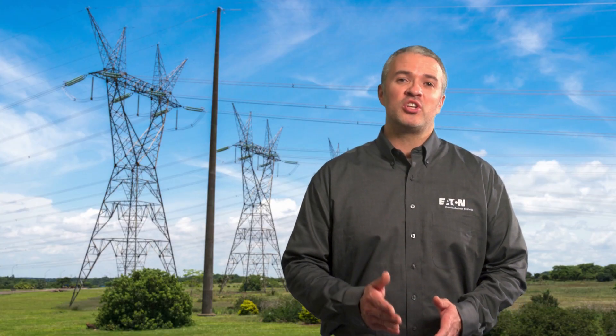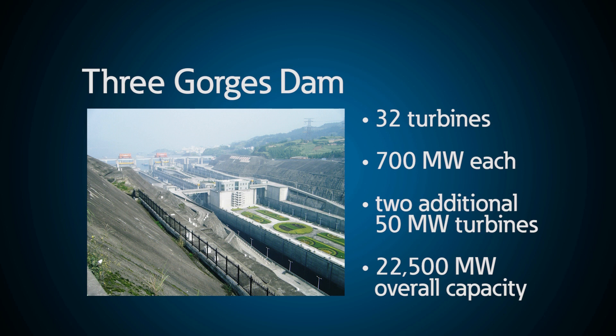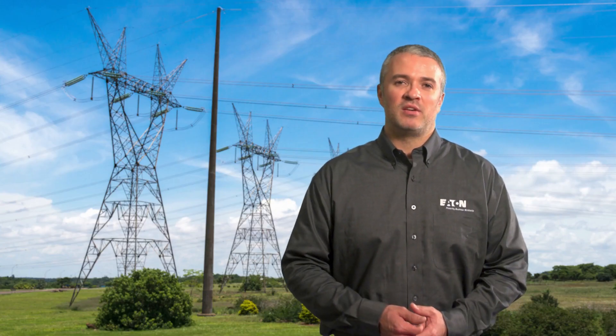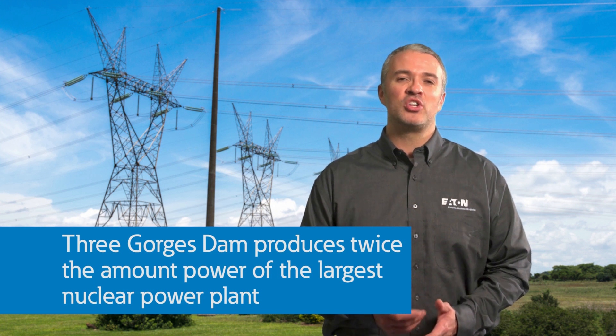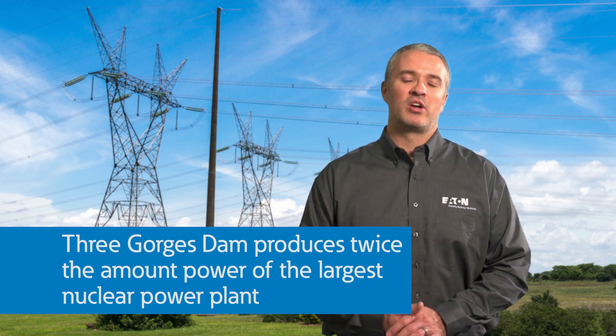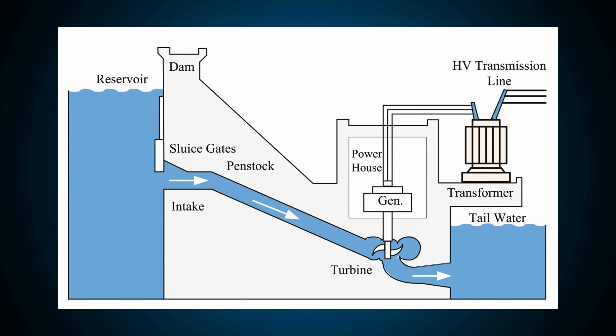The power plant with the largest available capacity in the world is the Three Gorges Dam in China, which utilizes 32 turbines, each with a capacity of 700 megawatts, plus two additional 50-megawatt turbines — an overall capacity of 22,500 megawatts. To put that in perspective, that is more than double the output of the largest nuclear power plant in the world, which is almost 7,500 megawatts. Hydroelectric plants spin a turbine using the force of water instead of steam, using the pressure created by either a difference of elevation for dams or the force of water in rivers.